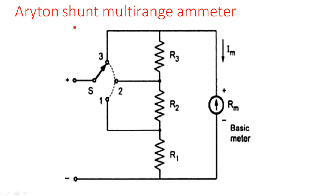But in the case of the R8N shunt multirange ammeter, we have taken a cascaded connection of multiple resistors where all these resistors are connected in parallel with the ammeter. You can take any number of resistors depending upon the ranges. In this example, we have taken three resistors for three ranges: I3, I2, and I1.